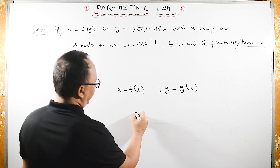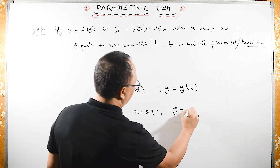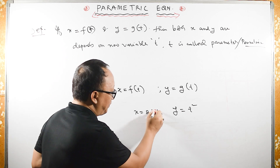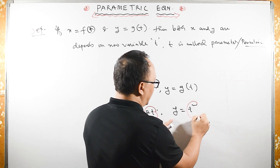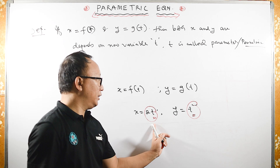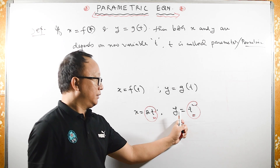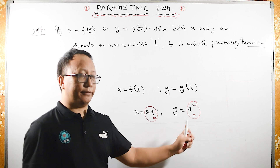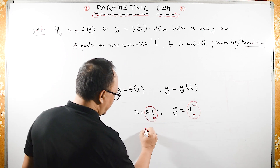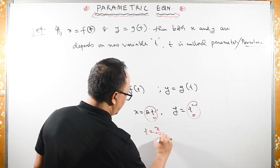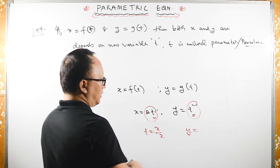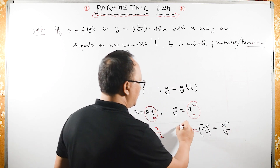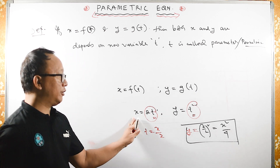Let us see: if I have x equals to 2t and y equals to t squared. Both x and y are totally dependent upon the variable t. Now if you want to see the graph, you have to eliminate t. From x equals 2t, we get t equals x over 2. Substituting into y, we get y equals x over 2, the whole squared, which is x squared upon 4.